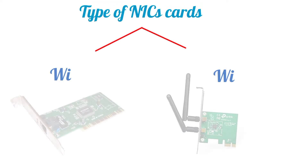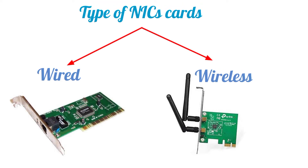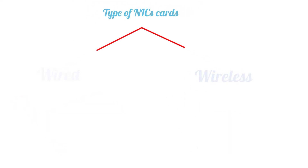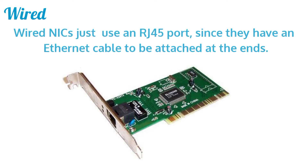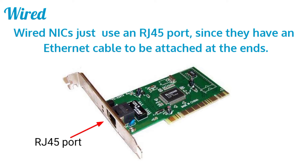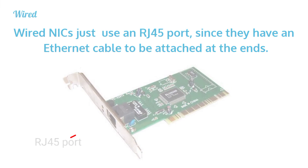NICs are of many types, but the two main types are wired and wireless. Let's talk about each NIC separately. Starting with the wired NIC, a wired NIC uses an RJ45 port since we have to connect an ethernet cable to it.